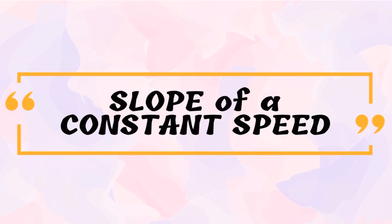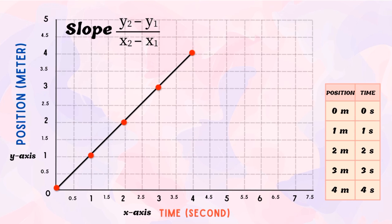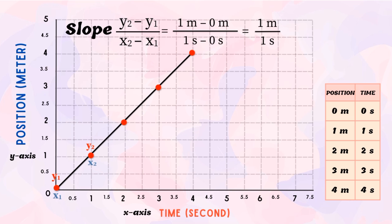In our second example, the line slants up from left to right, giving a constant and positive slope. We can get the velocity using the slope equation. For the first two points: y₂ = 1 meter, y₁ = 0 meter, x₂ = 1 second, x₁ = 0 second. So: 1 meter minus 0 meter = 1 meter, and 1 second minus 0 second = 1 second. Therefore, 1 meter divided by 1 second equals 1 meter per second — the velocity of the first two points is 1 meter per second.